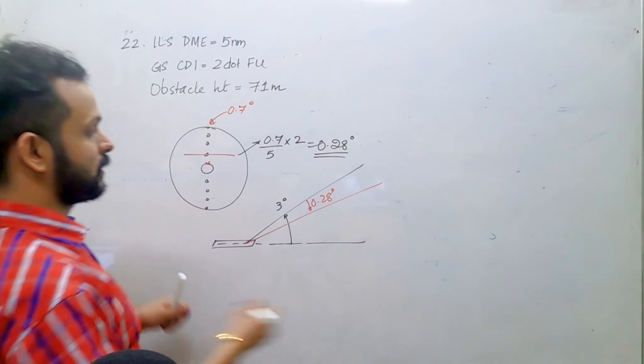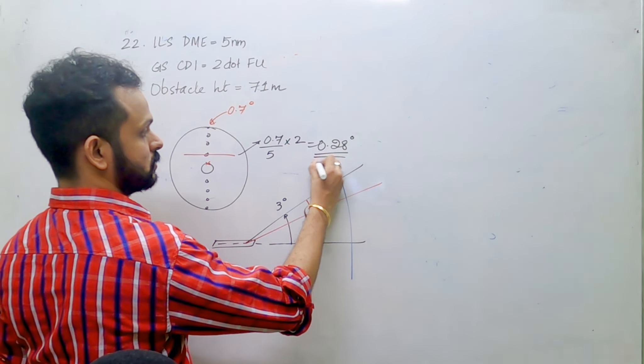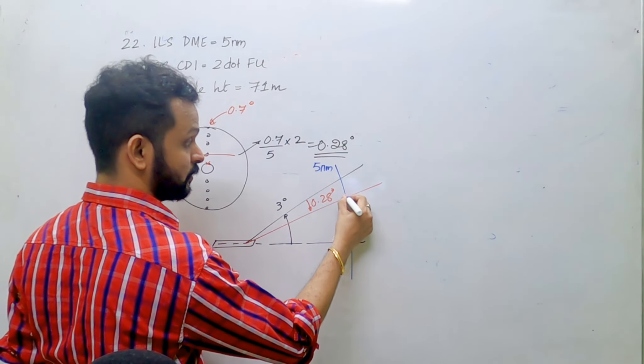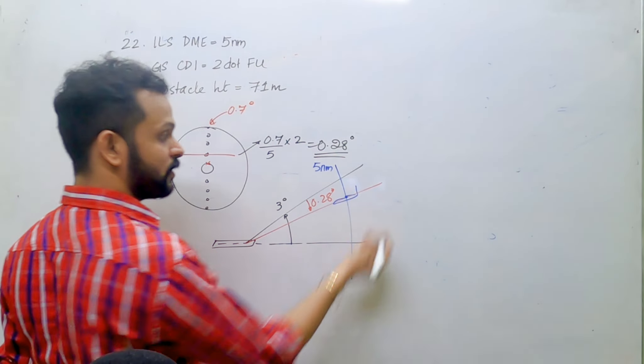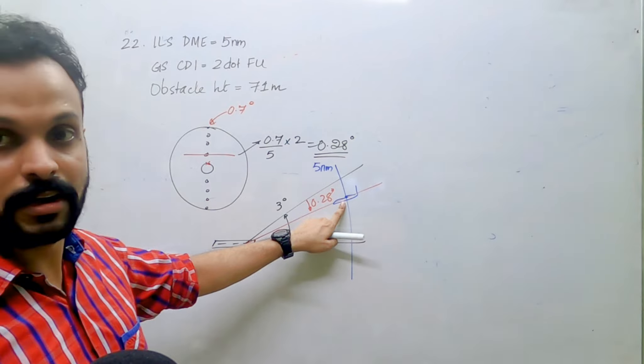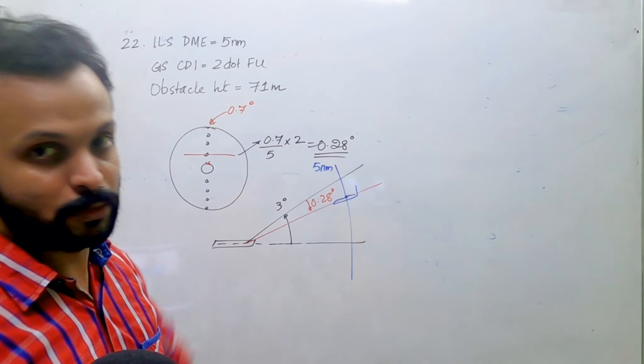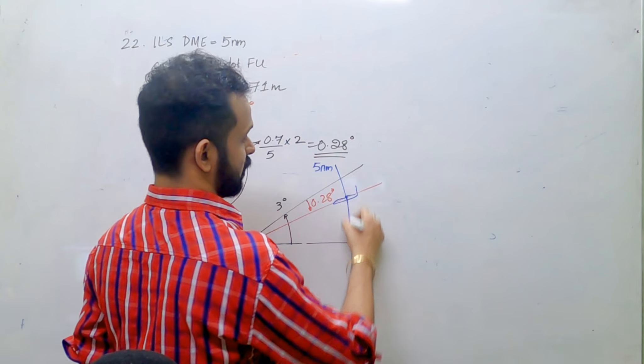The DME distance is five nautical miles from threshold. The aircraft is over here on this particular ILS. What we are trying to do is find the height of aircraft and then compare the obstacle. How do you find the height of the aircraft?